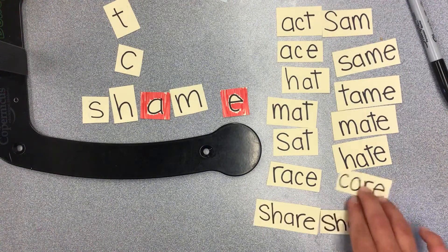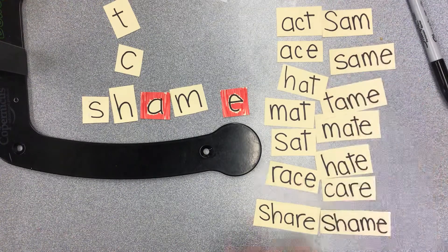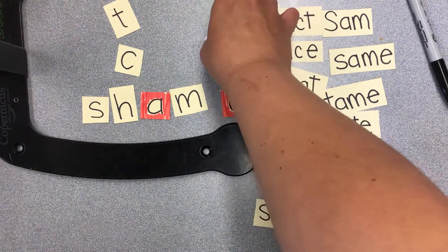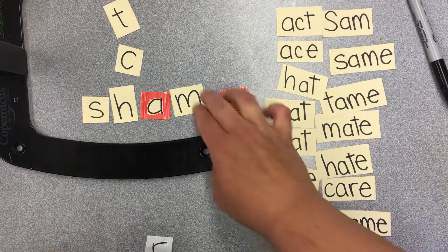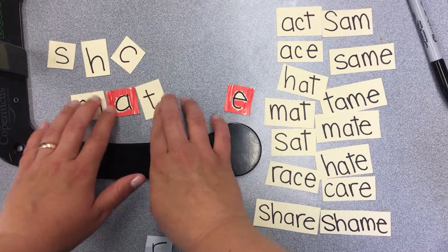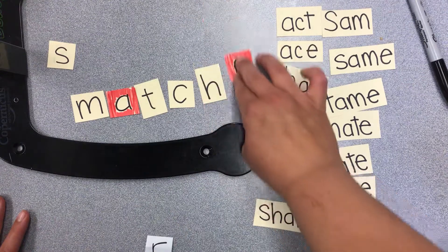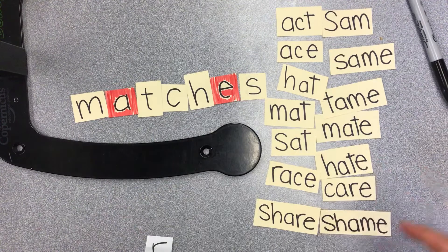Now, good luck finding the mystery word — it's kind of a tricky one. The letter R is not in the mystery word. Can you find it? It uses all the letters except for R. Can you tell what that says? Matches. You'll need matches to start a fire at camping.